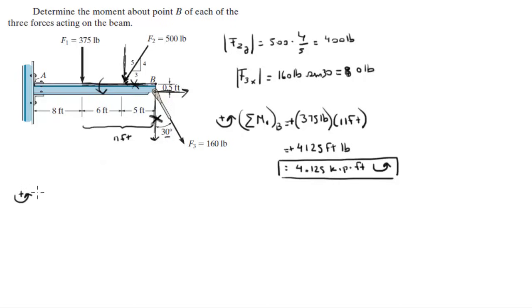The second moment, assuming counterclockwise is positive—the moment that F2 creates about B is equal to the Y component of F2, which we calculated to be 400 pounds, turning this lever of length 5 feet counterclockwise, which means it's positive.